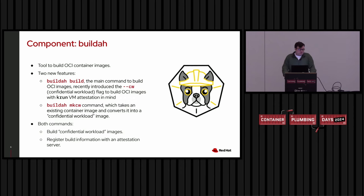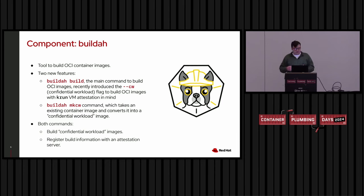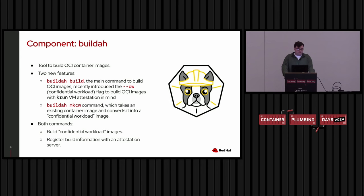One component we use to do this is BuildAH, a tool for building OCI container images. We introduced two new features: a flag called CW (confidential workload) on the main build subcommand, which builds container images specifically with KRUN VM attestation in mind; and a new subcommand called MKCW (make confidential workload), which takes an existing container image and converts it into a confidential workload image. Both commands also register build information with an attestation server.